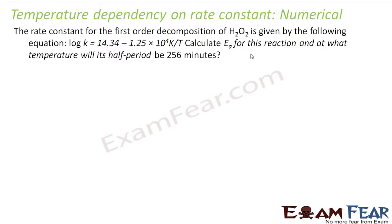The rate constant for the first order decomposition of H₂O₂ is given by a log equation. We have to find Ea for this reaction and the temperature at which its half-life will be 256 minutes. From T½ we can easily find K using K equals 0.693/T½, and then from K we can find the temperature using the Arrhenius equation.